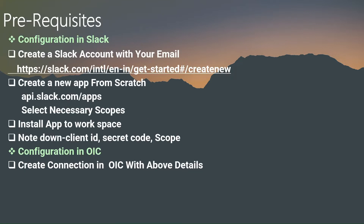Now we will look at the prerequisites in order to integrate with the Slack application. The first configuration step in Slack: you have to create a Slack account with your email ID. You will get a 30-day free trial account. You can use the highlighted URL to create a free account. Once you create the account, it automatically routes you to the messaging application - similar to how you message details within your team members.